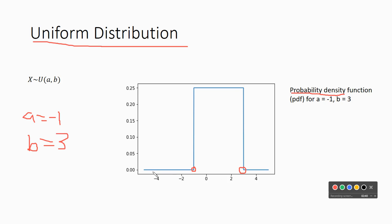And so there's no probability of anything happening less than negative one. There's no probability of anything happening for a number greater than three. But in between zero and three, there's the exact same probability of anything happening.